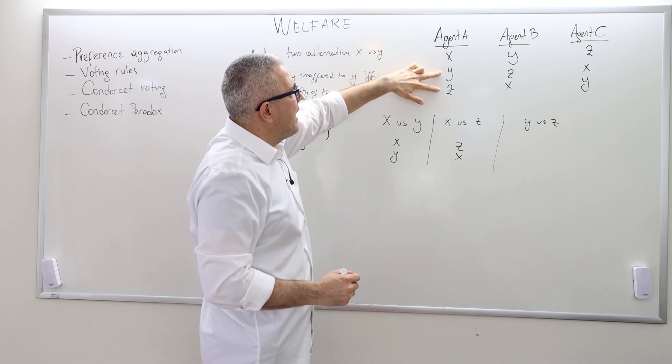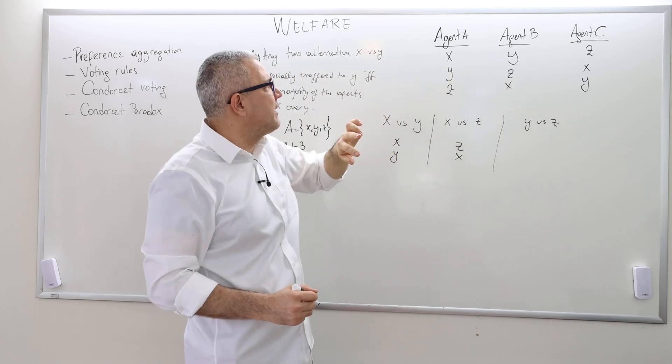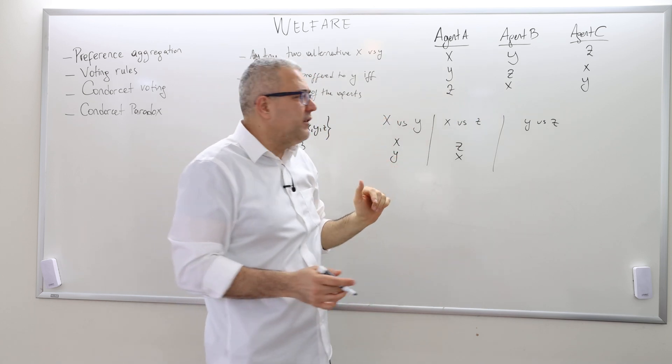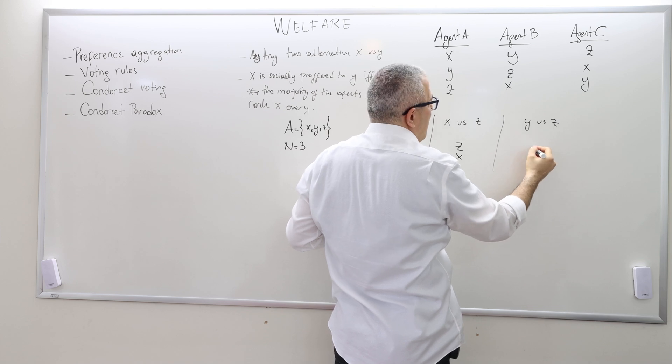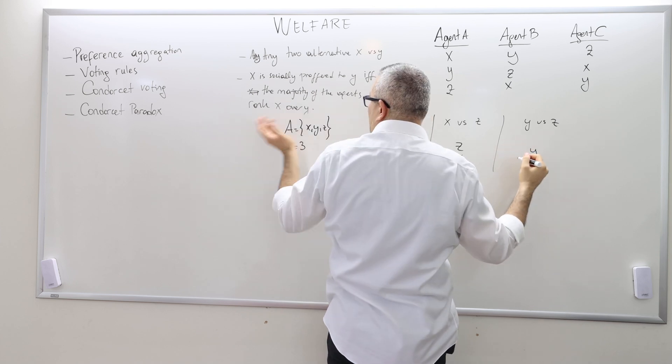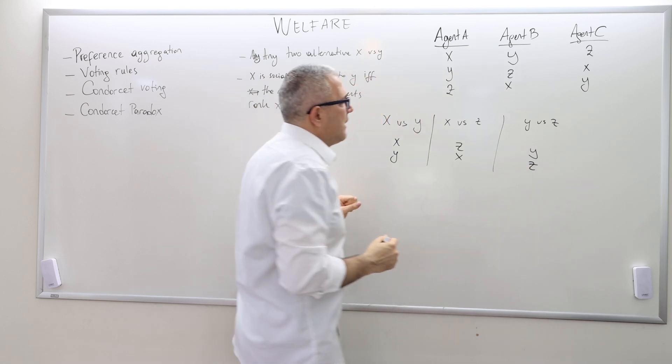And finally, Y versus Z. A says Y better than Z. B agrees with agent A. So hence, we have the majority. We don't really care about what agent C thinks. And therefore, socially, according to Condorcet voting, Y should be ranked above Z.